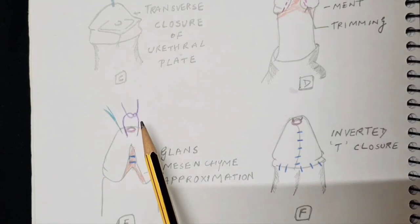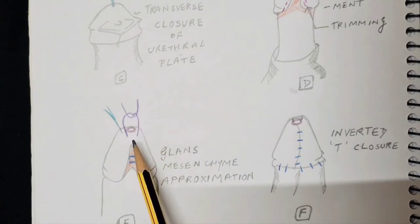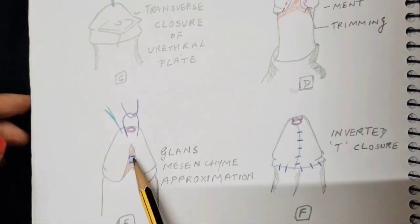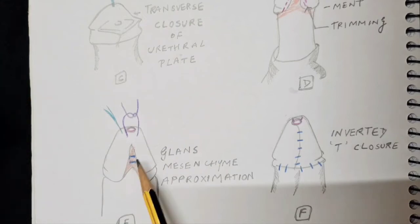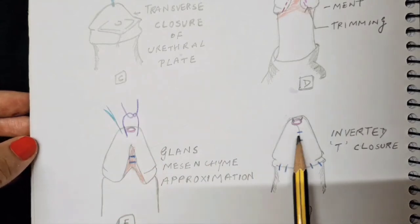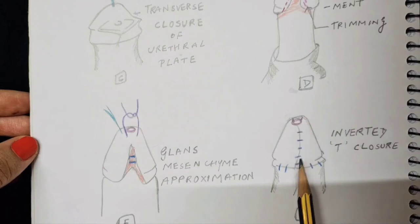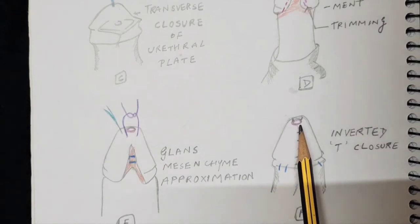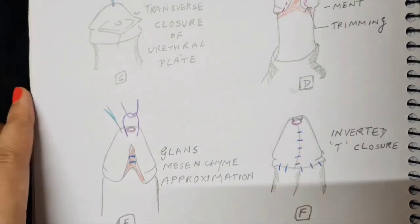The stay suture has been taken, the urethra has been advanced more distally, and the glans has been repaired from within. These are mainly done with Vicryl sutures; some prefer PDS as well. Once this has been closed and sutured together, it gives a more conical shape to the glans. After that the overlying incisions are closed so that the final picture will be of an inverted T with the urethral meatus at the tip of the glans, which is the desirable position.